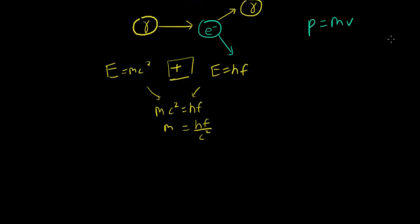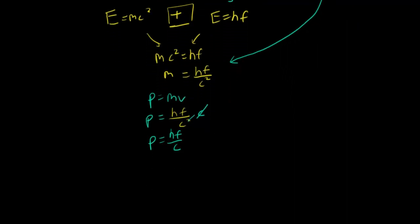What he did next was use this formula and plug it in. We have p equals mv for the basic momentum formula, and he plugged m into it. So we have p equals hf over c squared times v. But what is the speed of a photon? Photons always travel at the speed of light, so the speed would be c. We can cancel out the c's and we have p equals hf over c, which is the equation for the momentum of a photon.